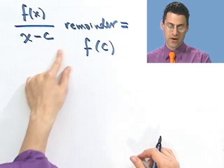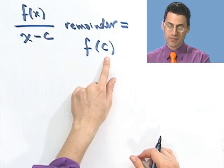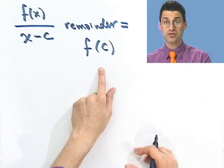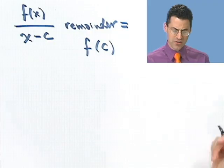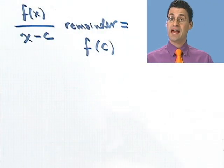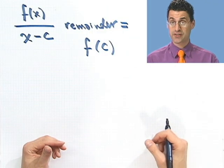But in fact, that will allow us to find factors of polynomials because a factor of a polynomial is just some piece so that when you divide it in, the remainder is zero. There's nothing left over. It goes in evenly. That's what it means to be a factor. So let's take a look at a very simple example and then build the factor theorem.